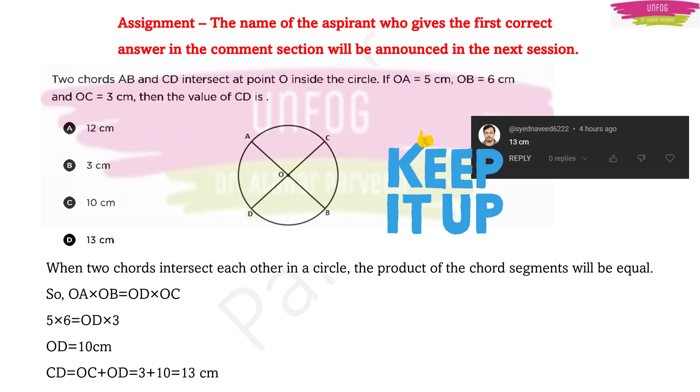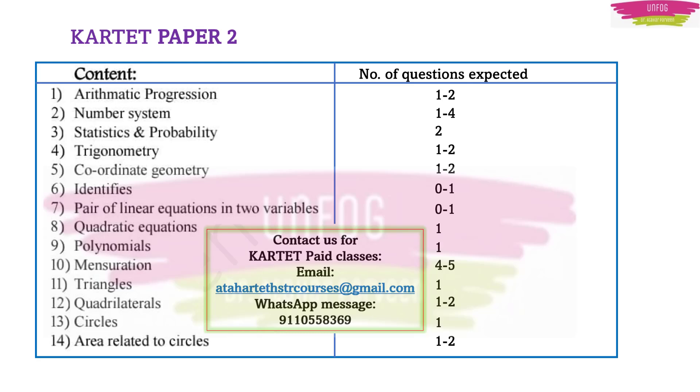Now let us move on with our blueprint which we have been discussing about since few weeks relating to mathematics syllabus of TET paper 2. This is the blueprint and here the first chapter is arithmetic progression. We can see that we can expect 1 to 2 questions of arithmetic progression even this time. In fact, 1 question is compulsory we can expect it.